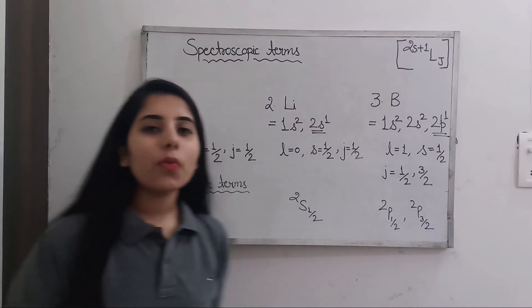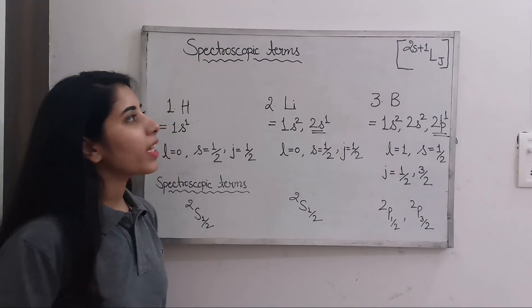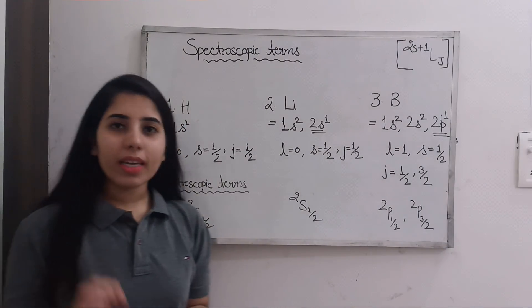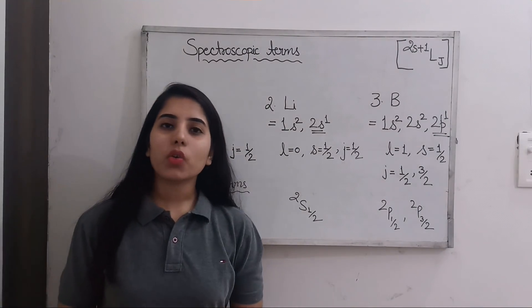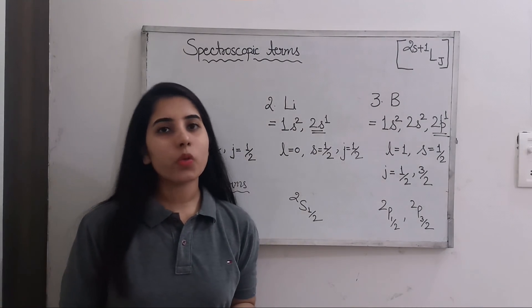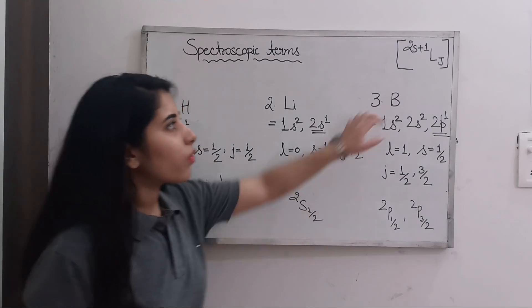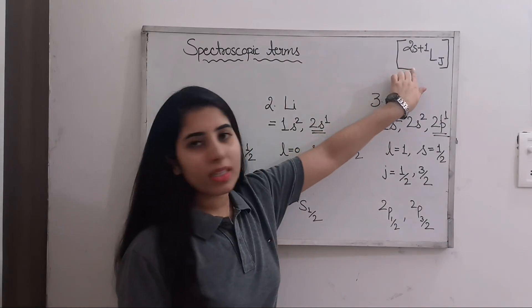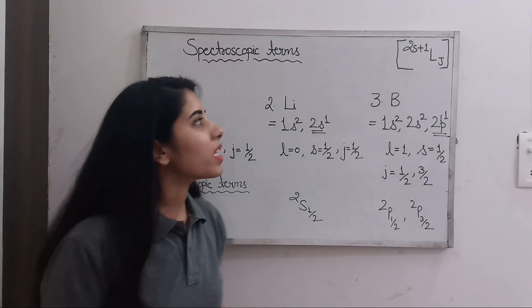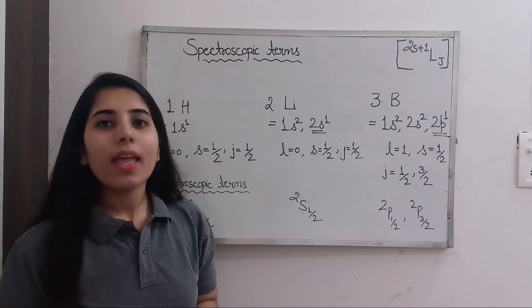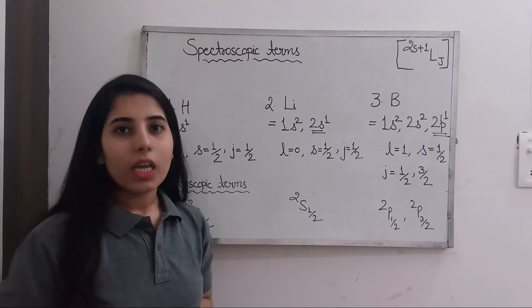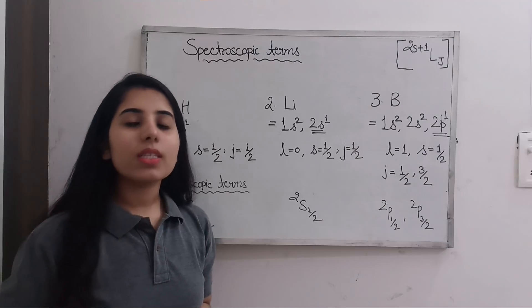First, I would like to tell you what spectroscopic term notation is. In general, we write it as 2S+1 L_J — that is the spectroscopic terms notation.